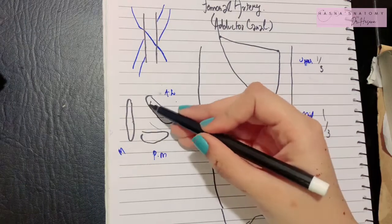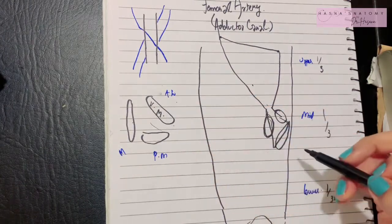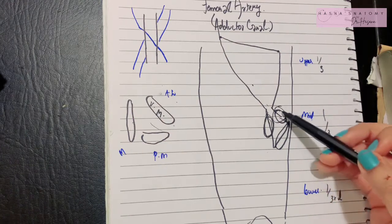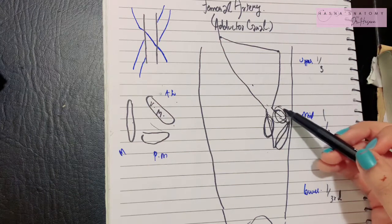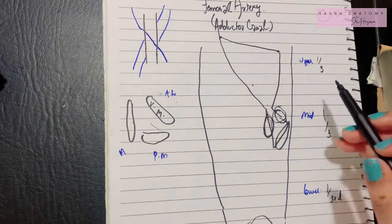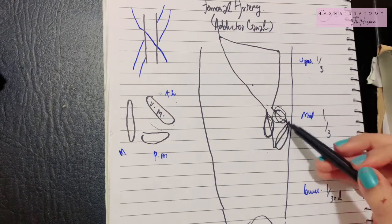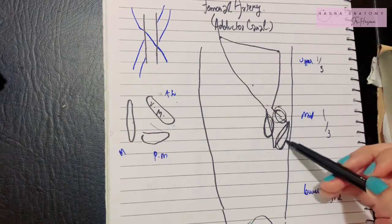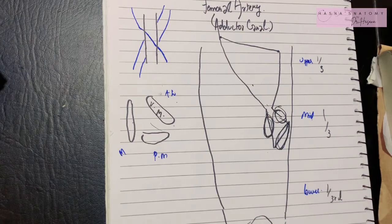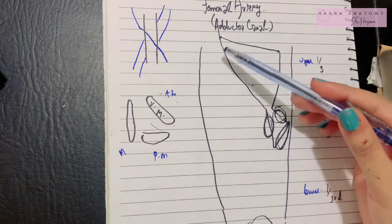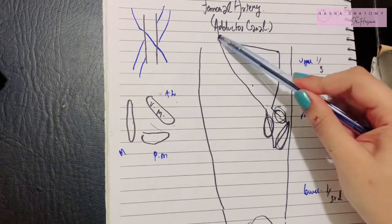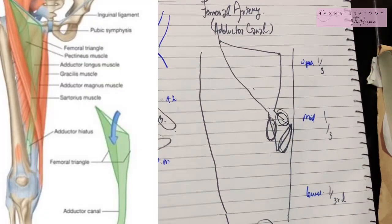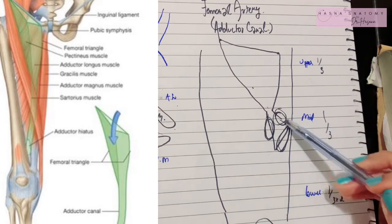The anterolateral boundary of the adductor canal is formed by the vastus medialis, which is part of the quadriceps femoris. The posteromedial boundary is formed by the adductor muscles — adductor longus above and adductor magnus below. Finally, the medial boundary is formed by the sartorius muscle.